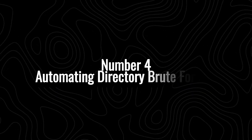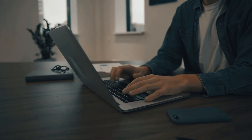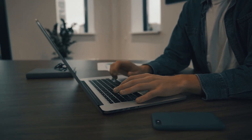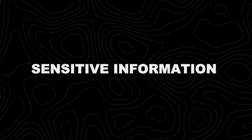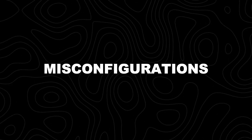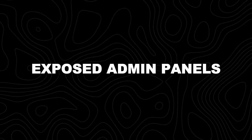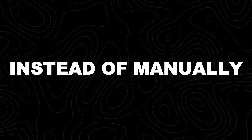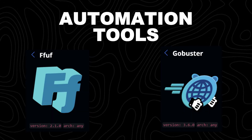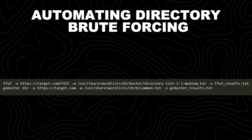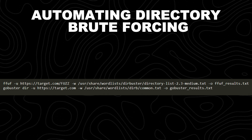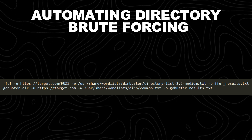Number 4: automating directory brute forcing. After identifying subdomains, the next step is discovering hidden directories and files that might contain sensitive information, misconfigurations, or exposed admin panels. Instead of manually guessing paths, tools like FFUF and GoBuster automate this process, quickly brute forcing directories and files on web servers. These commands use FFUF and GoBuster to automate directory brute forcing, helping identify hidden files and directories on a target website.